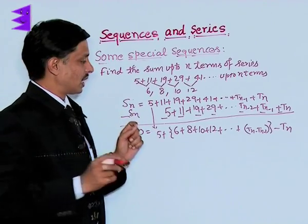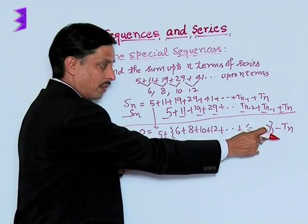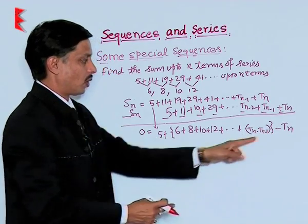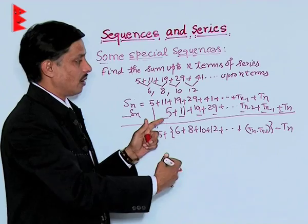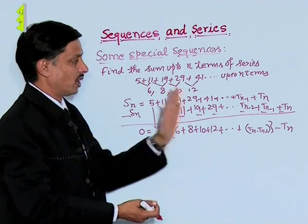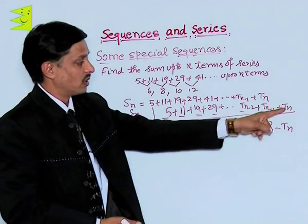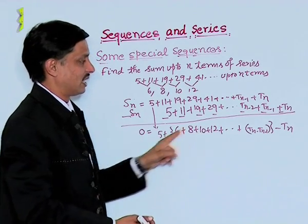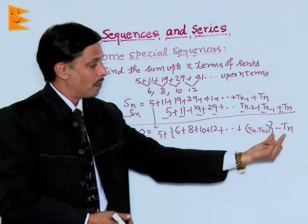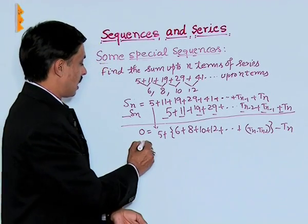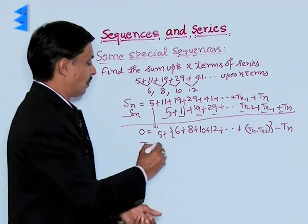We can observe from 5 to this the number of terms in this progression is n, but we have written it by just putting one step forward. So till this we can say this progression has n plus 1 terms in all. Minus T_n when shifted from RHS to LHS, this will be plus T_n.